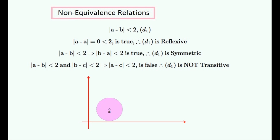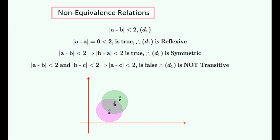Let's look at this relation in the complex number plane. The set of points closer to A than 2 is given by a circle around point A at the centre. Another point B, which is in this circle and thus closer to A than 2, has its own set of points being themselves closer to B than 2, represented by another circle. A third point C is closer to B than 2, and therefore in B's circle, but it is not in A's circle and not closer to A than 2. So therefore this relation is not transitive.